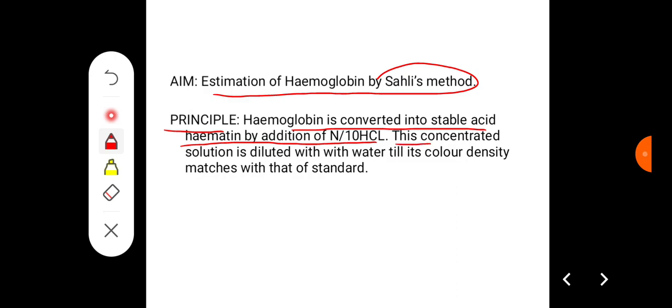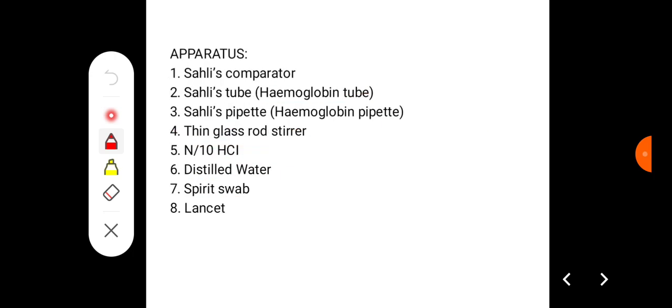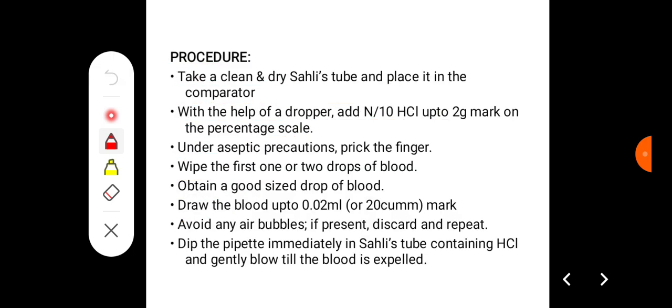This concentrated solution is diluted with water till its color density matches with that of standard. The apparatus required for this method is Sahli comparator, Sahli tube which is also called hemoglobin tube, Sahli pipette which is also called hemoglobin pipette, thin glass rod stirrer, N/10 HCl, distilled water, spirit swab, and lancet.